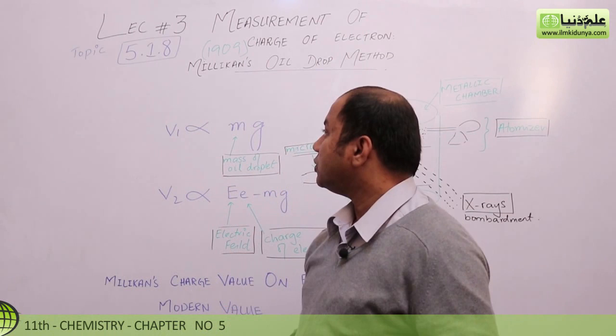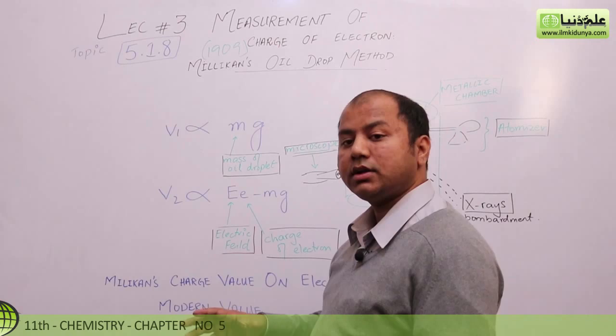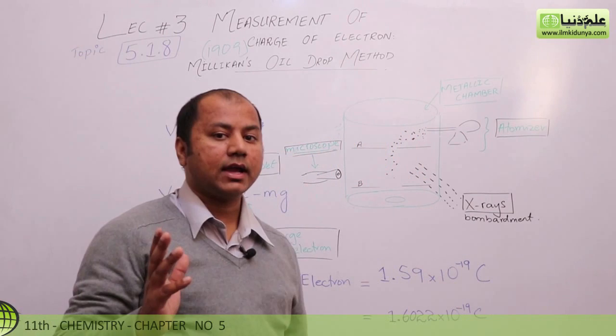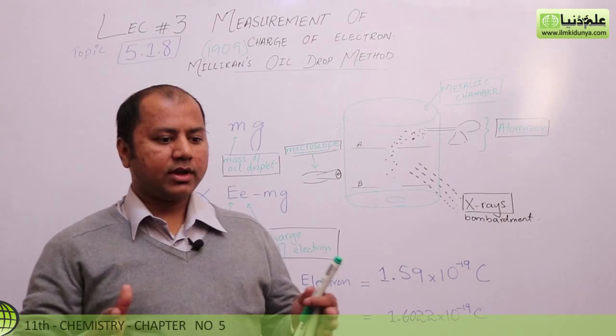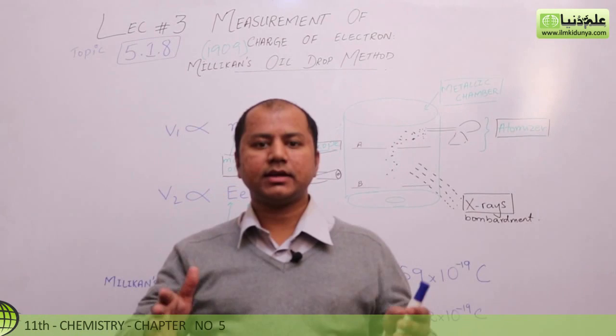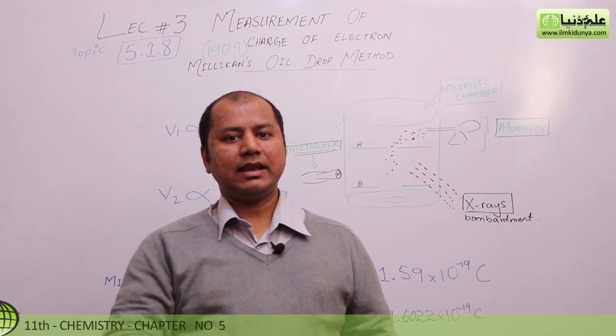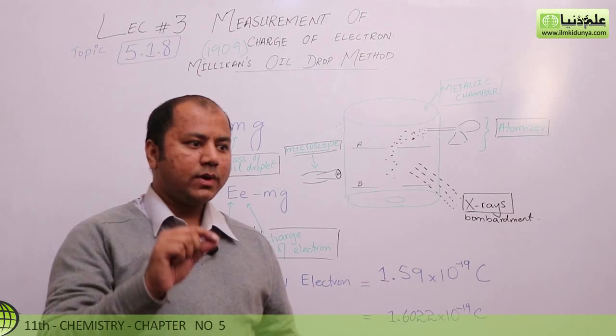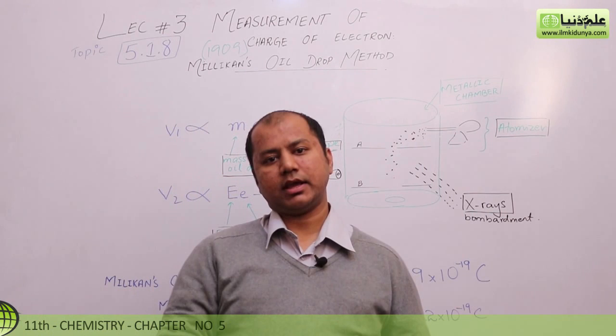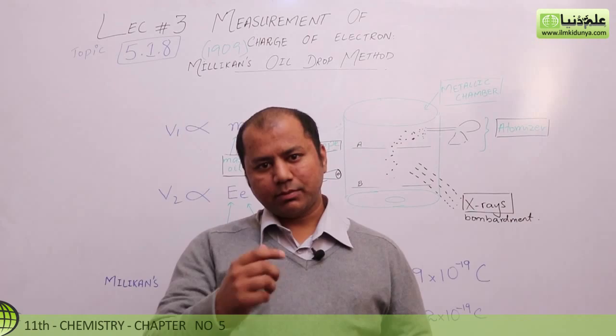This was a time when science was revealing new mysteries. As we have seen in the last lecture, Thomson used an electrical field and magnetic field to determine the charge-to-mass ratio. So from that, the value of charge was to be determined.